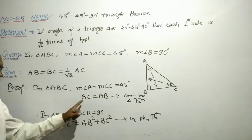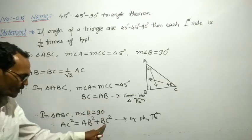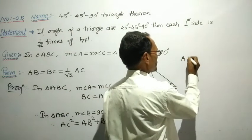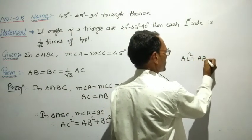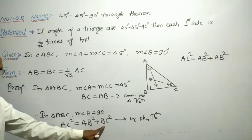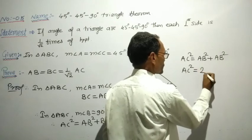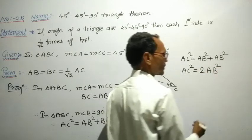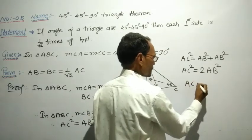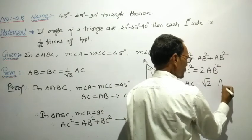Now, since BC equals AB, we substitute BC with AB. The statement becomes AC squared equals AB squared plus AB squared. Therefore, AC squared equals 2 times AB squared. Taking the square root on both sides, we get AC equals root 2 times AB.